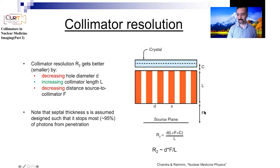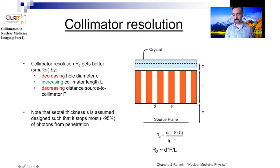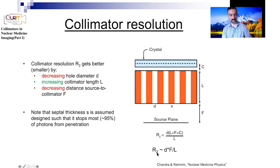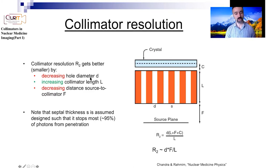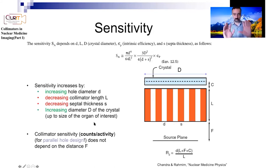Looking at the parameters: d is the hole diameter, s is the septal thickness, l is the septal length, and f is the source-to-collimator distance. The collimator resolution formula is approximately R_collimator = d(f + l) / l, but since f is typically much larger than l, the formula simplifies. Collimator resolution gets better (smaller) when you decrease the hole diameter d, increase the collimator length l, and decrease the source-to-collimator distance f. The septal thickness must be designed to stop most photons from penetrating.